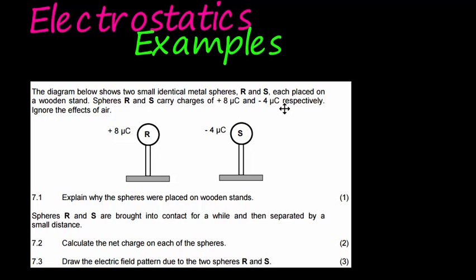R and S, each placed on a wooden stand. Spheres R and S carry charges of positive 8 microcoulombs and negative 4 microcoulombs respectively. Ignore the effects of air. Explain why the spheres were placed on wooden stands.